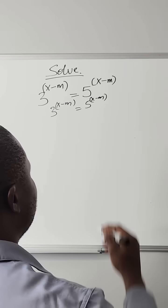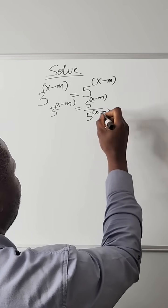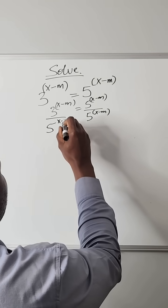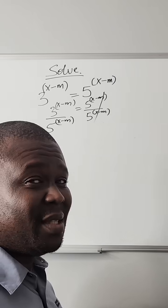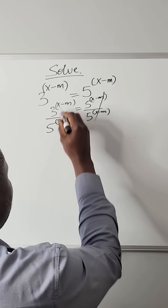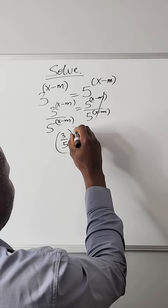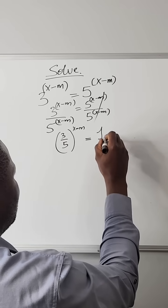We can decide to divide this side by that since the powers are the same. Now we have the same powers. This becomes 3 over 5 raised to power x minus m equals 1.